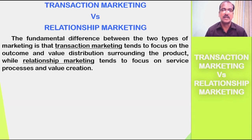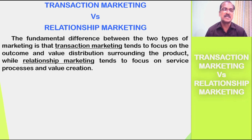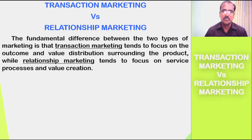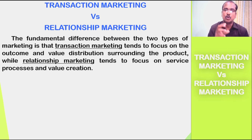The fundamental difference between the two types of marketing is that transaction marketing tends to focus on the outcome and value distribution surrounding the product, while relationship marketing tends to focus on service processes and value creation. Therefore, transaction marketing — which is a traditional marketing — focuses on the final outcome of business transactions and value distribution surrounding the product. Whereas the main focus of modern relationship marketing is on the service processes through which a company could create value for the buyers.